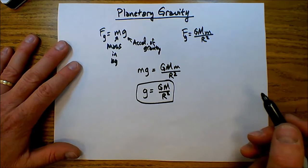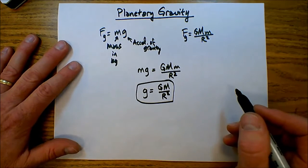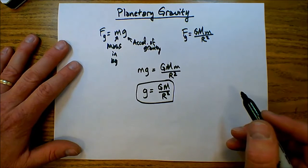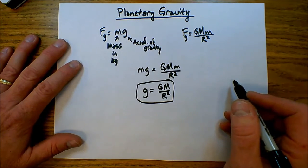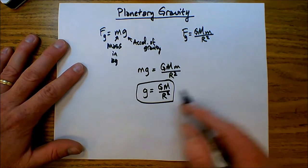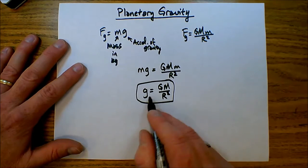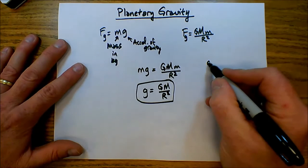Now sometimes you'll encounter a problem that says, suppose a planet is discovered that has double the mass of the Earth and triple the radius of the Earth, what is the acceleration of gravity at the surface of that planet? For that I can remember this: little g equals G mass over r squared.